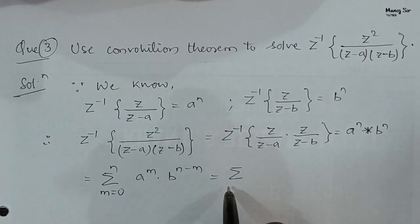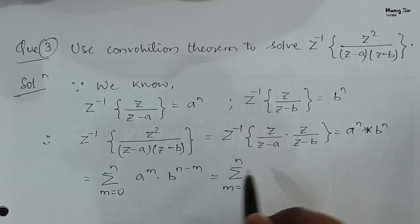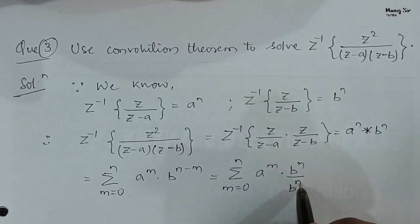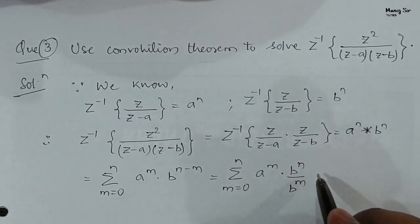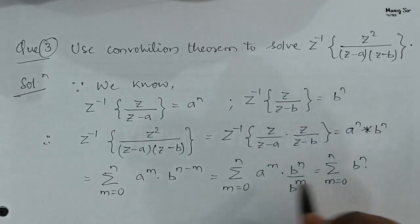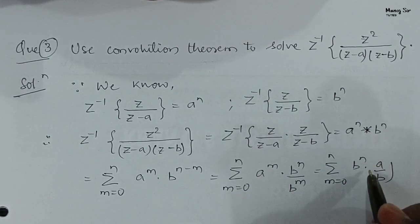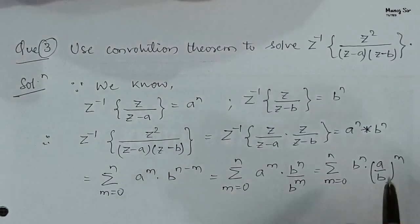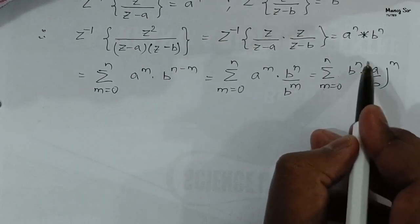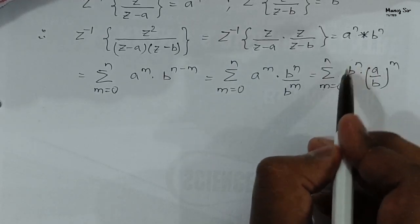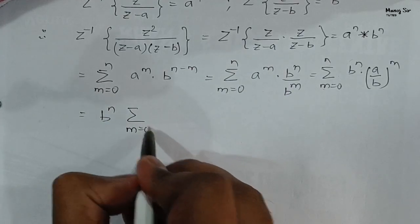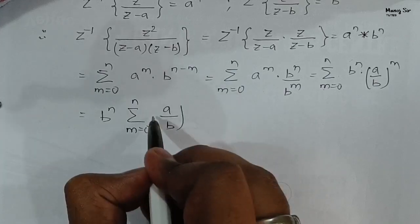Solving this summation from m equals 0 to n: keeping A^m as it is, we rewrite B^(n−m) as B^n / B^m. So the expression becomes summation from m equals 0 to n of B^n · (A/B)^m. Since B^n does not depend on m, we factor it out: B^n · summation from m equals 0 to n of (A/B)^m.